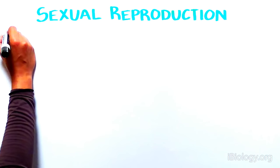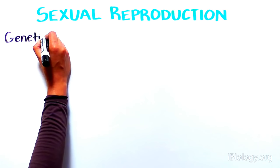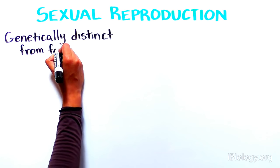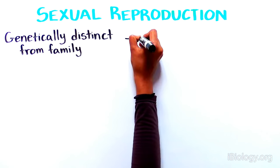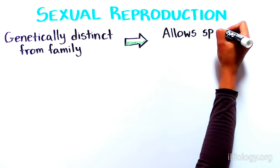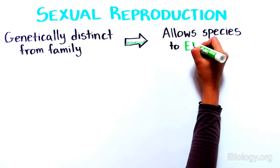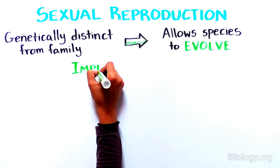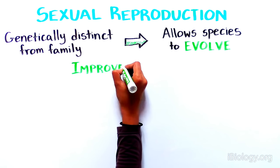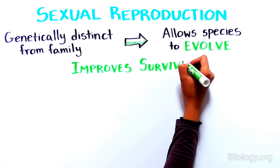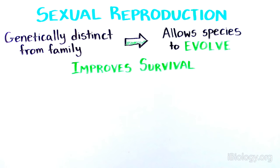The biggest advantage of sexual reproduction is that offspring are genetically distinct from their parent and their siblings. This allows a species to evolve, since natural selection will favor the offspring carrying genes that improve their survival in diverse environmental conditions.